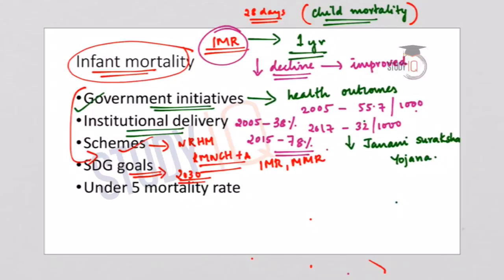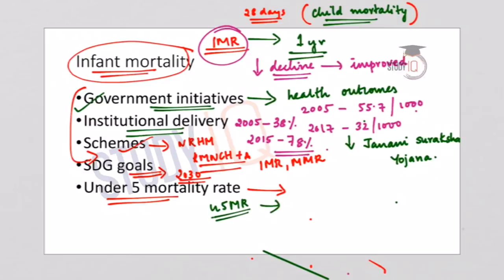Analyzing the under-5 mortality rate — the mortality rate of children under age 5 — India has made an even more significant improvement than in IMR. India is almost at par with the global average of 39 per thousand. This is a result of measures in immunization coverage and other factors, with immunization playing a major role in reducing the under-5 mortality rate.